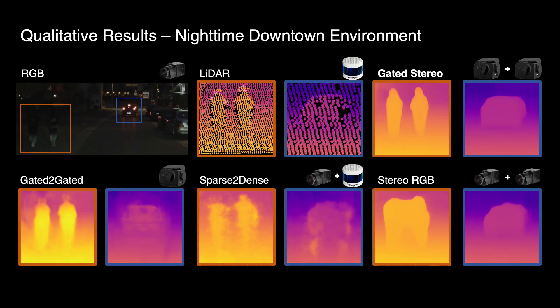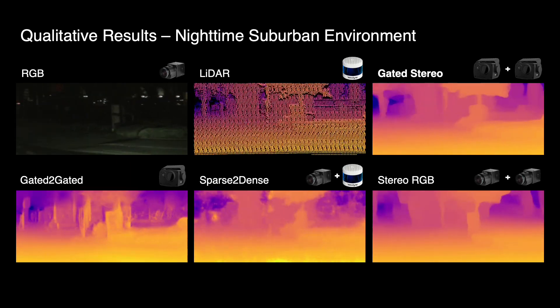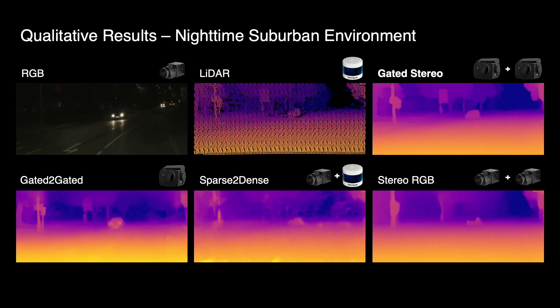This zoom-in shows that gated stereo is the only method able to separate the two pedestrians without any problems. Here is another video in nighttime conditions where the test vehicle is driving in a suburban environment.